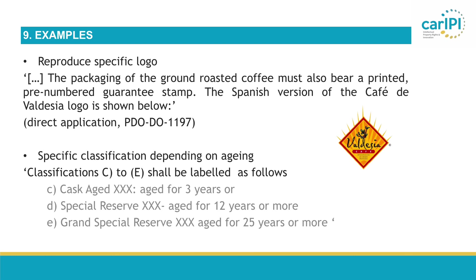Here are some typical examples: the reproduction of a logo — an example from a direct application is used here to show the logo — and another example could be a specific classification depending on aging, such as reserve, special reserve, or grand special reserve.